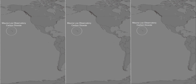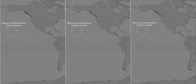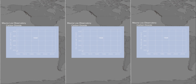Since 1958, atmospheric carbon dioxide has been measured at an observatory on the Mauna Loa Mountain in Hawaii. The white line shows atmospheric CO2 levels rising and falling at the Mauna Loa Observatory. A fall and rise occurs each year, and the explanation for that lies in the Earth's plants.